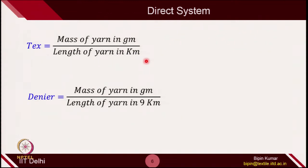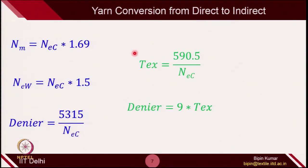In the direct system, tex is described as mass of yarn in grams per length of yarn in kilometers — so you take 1 kilometer of yarn and measure its weight; that is the tex value. In the case of denier, you take the mass of yarn in grams per length of yarn in 9 kilometers. You can anytime switch from direct to indirect system, because if you know the mass and the length, it is just the ratio of these 2 terms.